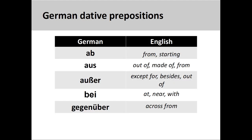The dative prepositions we will discuss in this video include: ab, meaning 'from a certain point in time,' 'from a certain place,' or 'starting on'; aus, meaning 'coming out of,' 'made of,' or 'from'; außer, meaning 'besides,' 'with the exception of,' or 'out of'; bei, meaning 'at,' 'near,' or 'with'; and gegenüber, meaning 'across from.'